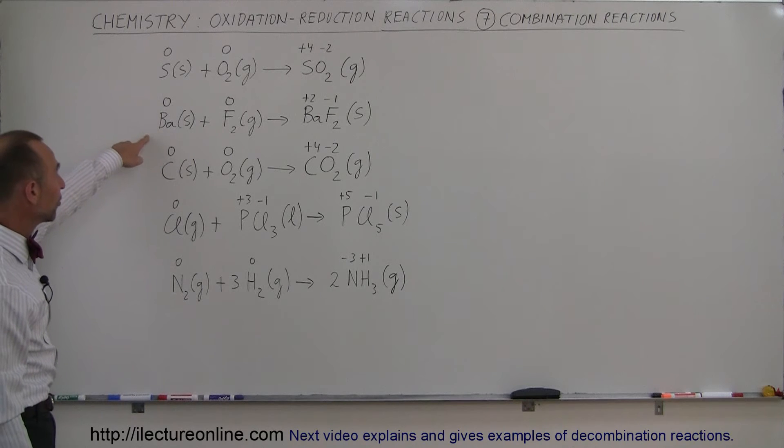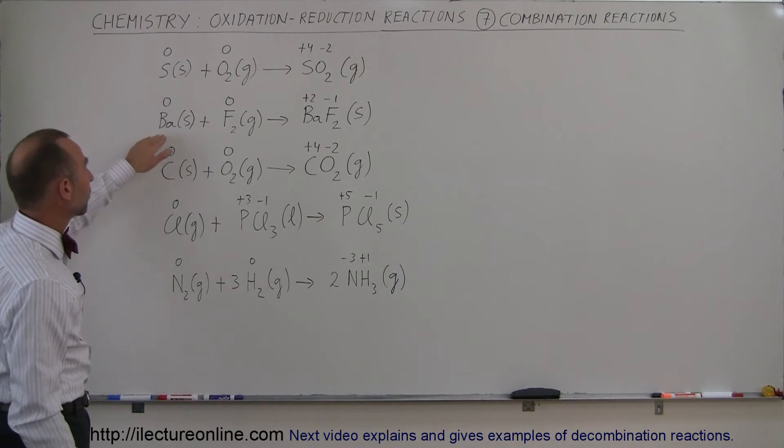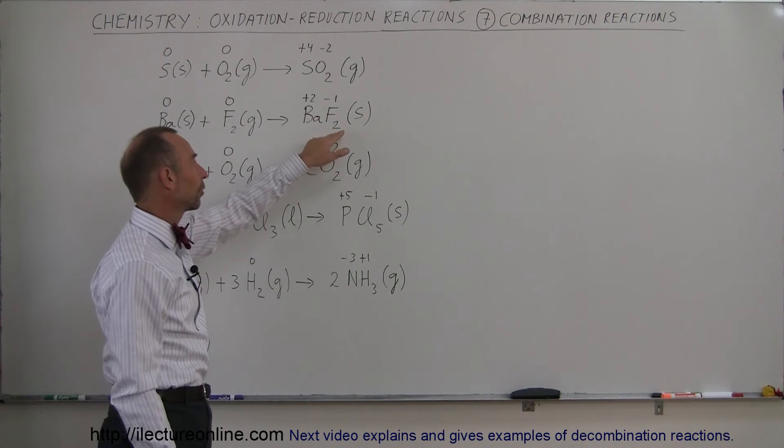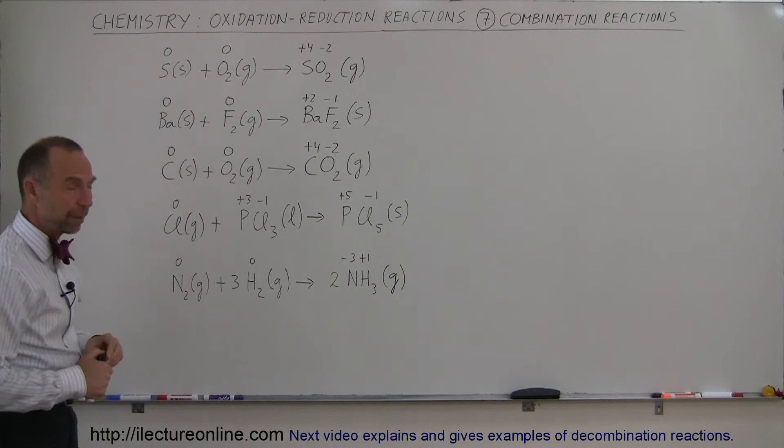The next one we have barium in a solid state and fluorine gas. We combine those. Notice that barium goes to an oxidation state of plus 2 and fluorine goes to minus 1. Of course there's two of them to balance out the equation. And so we end up with barium fluoride.